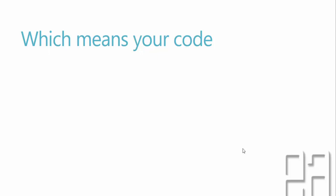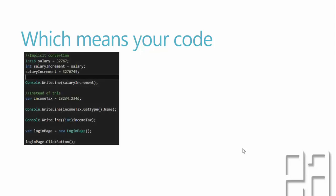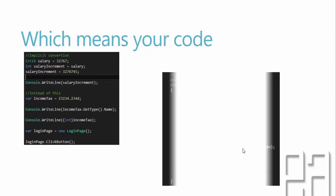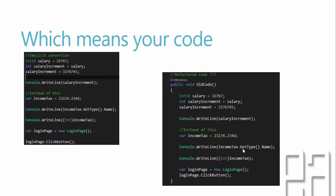You can wrap all your code into methods, as we already did with the main method. We can create a method like public void OldCode and keep all the unnecessary code inside it, then start working with new code in the main method. This way we can refactor our code — meaning cleaning up unnecessary code, or reusing that code elsewhere so you don't have to write the same lines again and again.